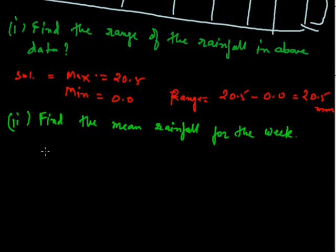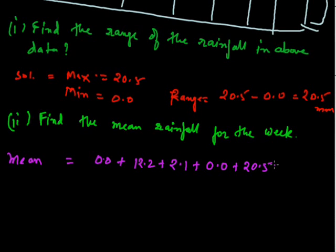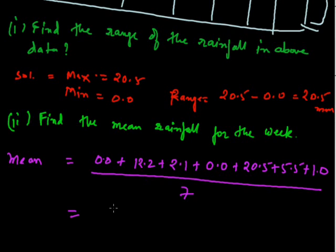Second part is find the mean rainfall for the week. So the mean rainfall will be sum of all the rainfalls on the particular days divided by the number of days, that is 7. So mean will be 0.0 plus 12.2 plus 2.1 plus 0.0 plus 20.5 plus 5.5 plus 1.0 whole divided by 7. That comes out to be 41.3 divided by 7, which will be 5.9.